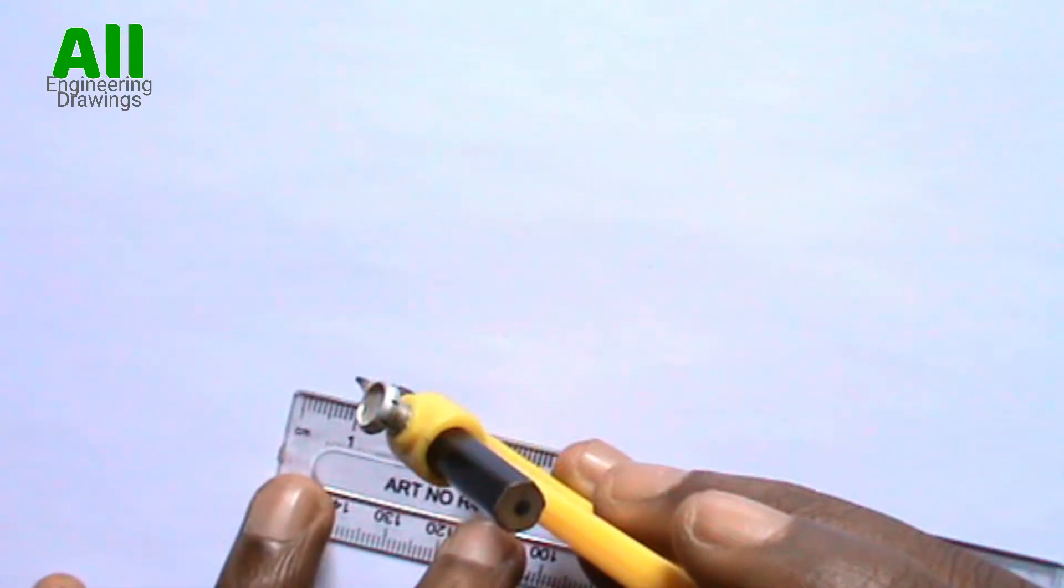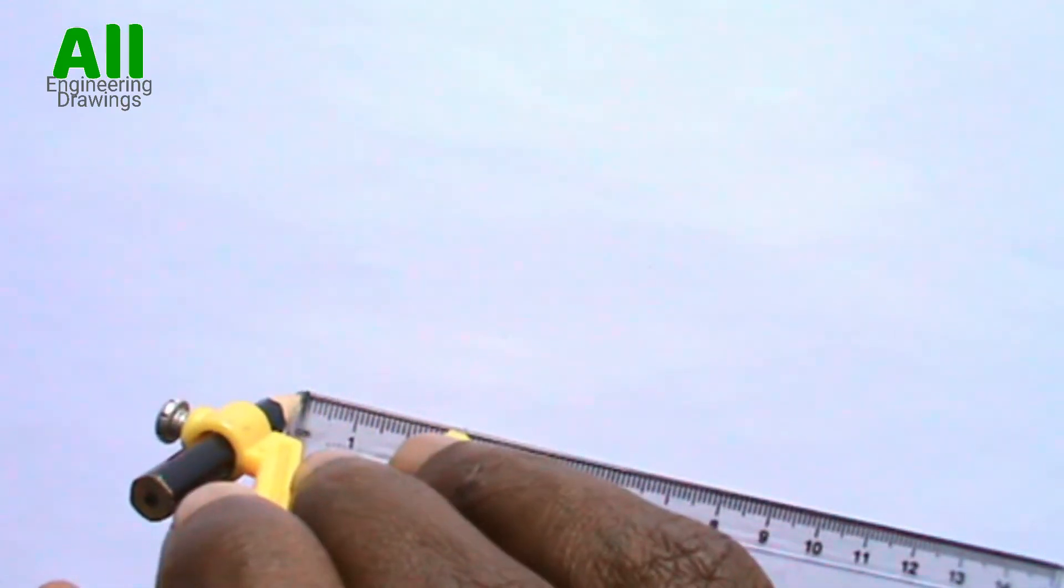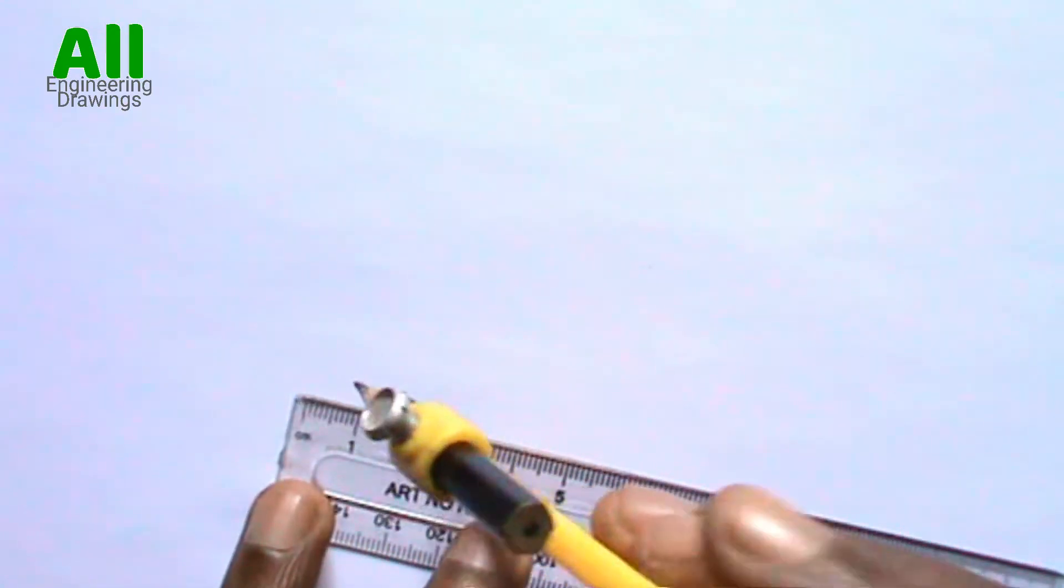To draw a circle, you have to use your compass to take the required radius from your ruler this way. Then draw your circle.